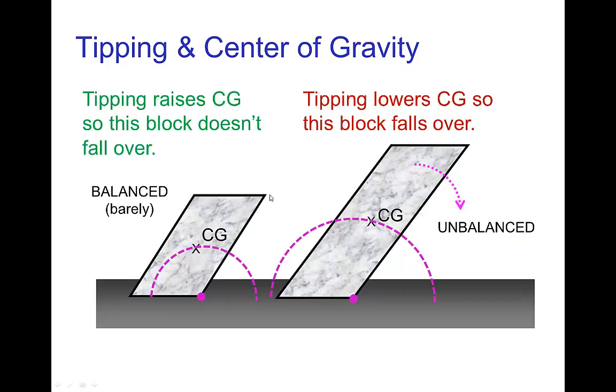Let's see that in another example here. This first case on the left, this object has this slanted shape, and it happens to be in balance. It will not tip over, because if it tipped over, the center of gravity would have to first come up and then come down.